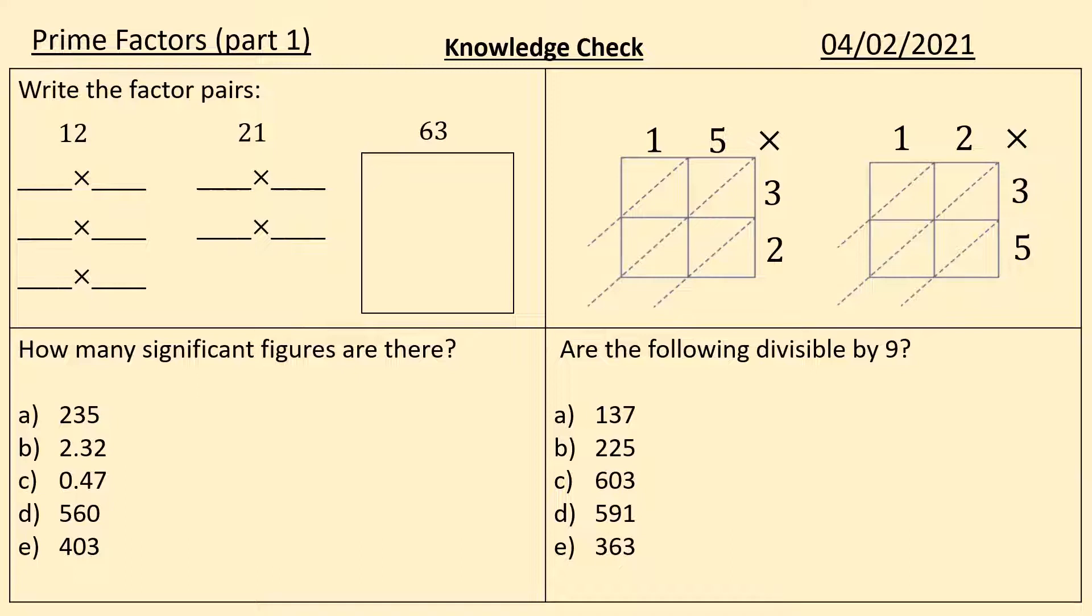Okay, let's go through some answers then. So the factor pairs, firstly for 12, we have 1 and 12, 2 and 6, 3 and 4. You can see even though it's quite a small number, 12 has a lot of factors, which makes it nice and useful for us. 21 only has a couple of factor pairs, 1 and 21 and 3 and 7. And 63 has three factor pairs, so make sure you've ticked and fixed those.